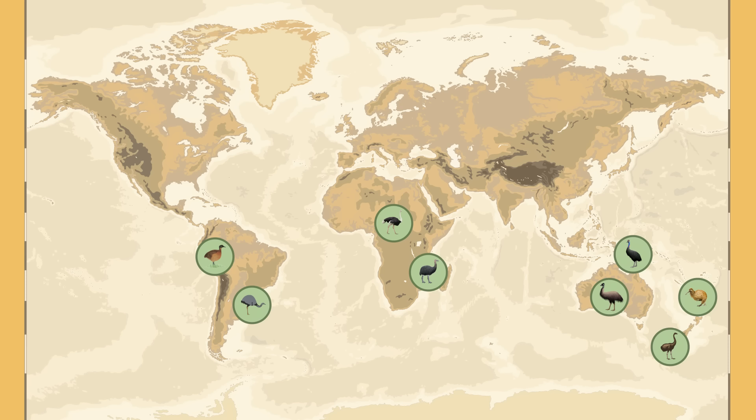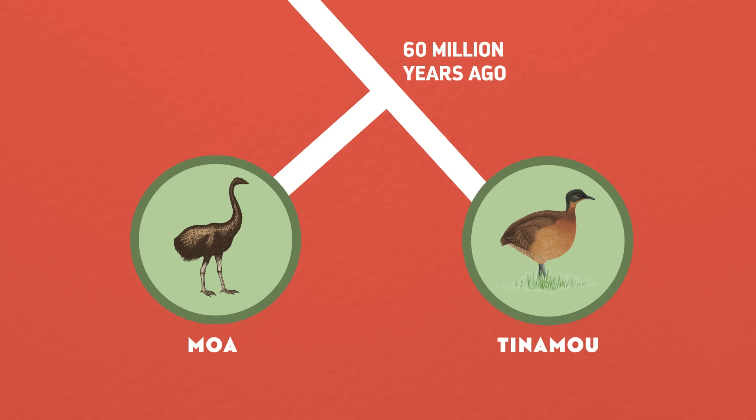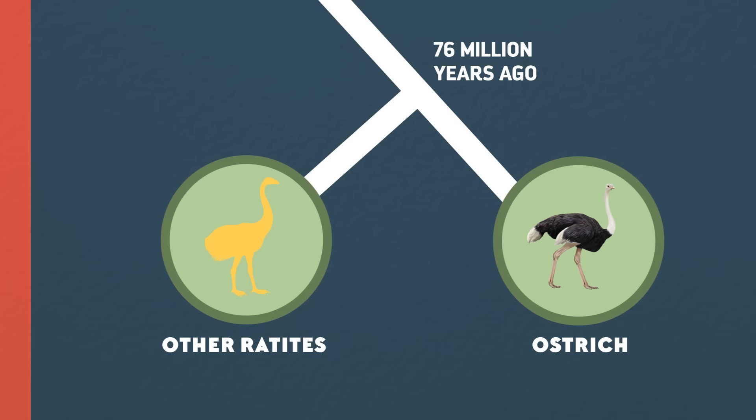The DNA data showed that many of these groups split during the present Cenozoic era, long after Gondwana had broken up. For instance, elephant birds and kiwis diverged in the Eocene epoch, about 50 million years ago. And moas and tinamous parted ways about 60 million years ago, back in the Paleocene. But ostriches split apart from the other ratites way back in the Mesozoic era, some 76 million years ago, long after Africa split from the rest of Gondwana.